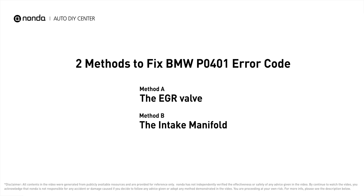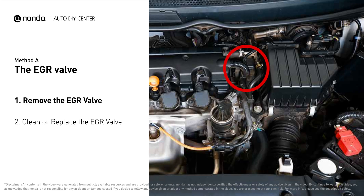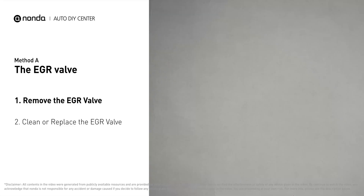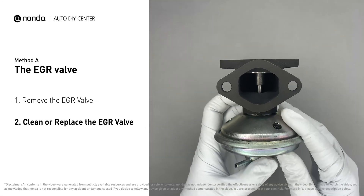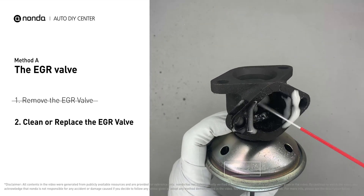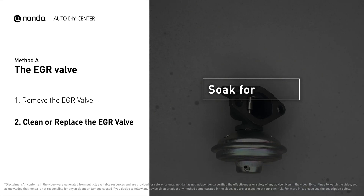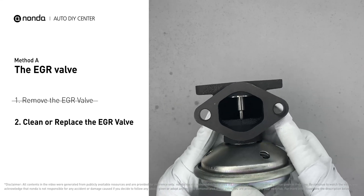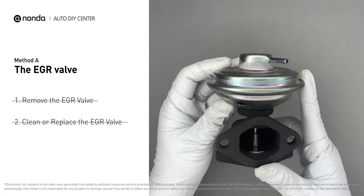Here are two of the most practical solutions to fix BMW's P0401 error code. Method A: the EGR valve. Looking at the engine from the front, the EGR valve is located towards the rear of the engine, just to the right side of the center. First, carefully remove the EGR valve from your car, turn it upside down, and fill it up with WD-40 cleaner. Let it soak for five hours for the solvent to get rid of all the carbon buildup. After the cleaned EGR valve gets dry, reinstall it back into the car. If it is too dirty to be cleaned, you may replace it with a new EGR valve.